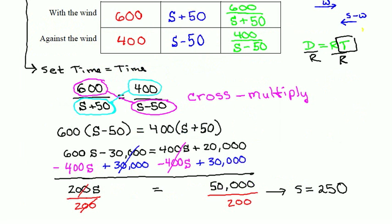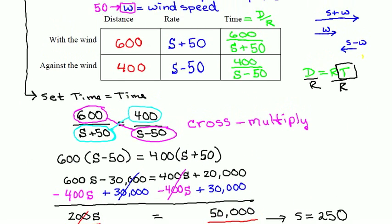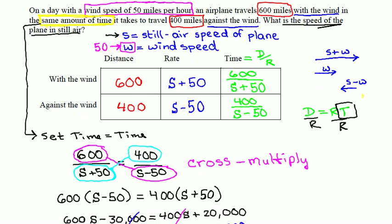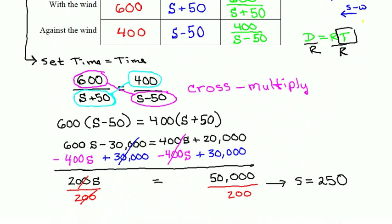So I get s equals 250 as my solution to the equation, and it's always good now to look back at the question and look back at the variable definition and see if this is the answer that we're looking for or if we need to plug it back in somewhere. Sure enough, s is the still air speed of the plane, and we are asked what is the speed of the plane in still air, so s is exactly the answer that we want. So I'm going to just express this with units, 250 miles per hour.